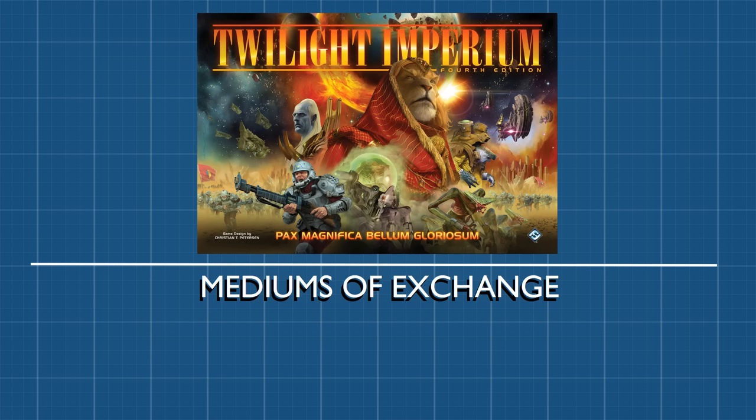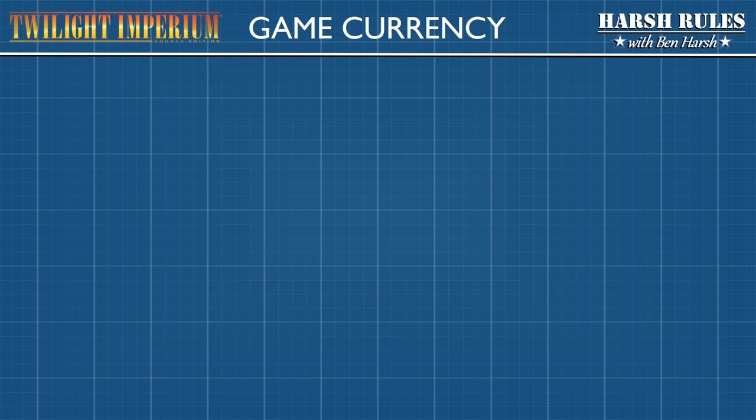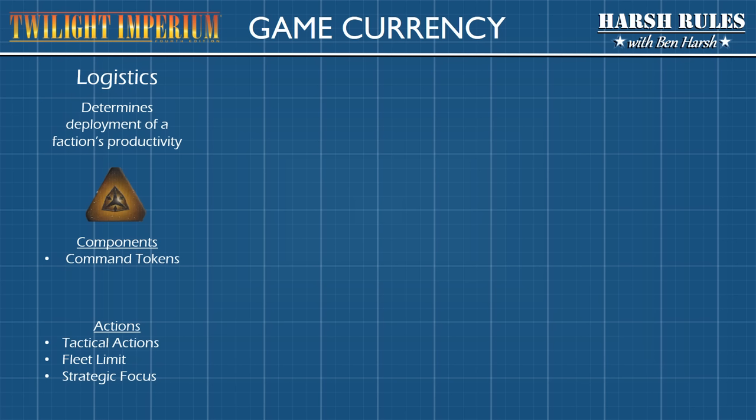One key factor in learning Twilight Imperium is understanding the game's various currencies and economies. So let's take a closer look at the mediums of exchange. To help us learn the rules, I've organized these currencies into three categories. The first medium is Logistics.